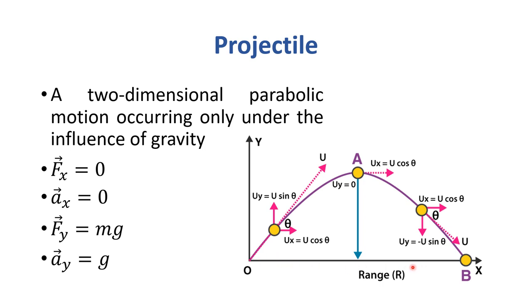Range is the distance from the point of launch to the point of landing. Height is the vertical distance from the peak to the ground. The total time taken is called time of flight.